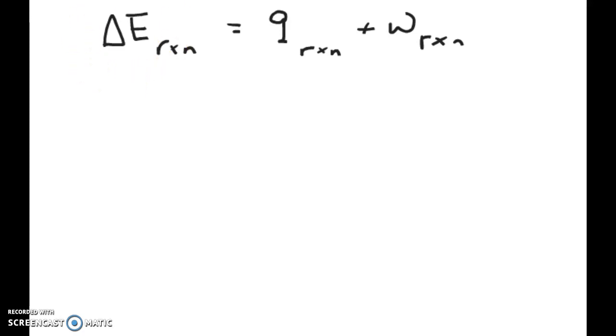And that change of energy is what we call delta E. And that's composed of both the heat component and the work component. As we discussed in topic six, the work component is usually fairly small so we can ignore it. And we ended up just measuring mostly the heat component because that's easy to measure.